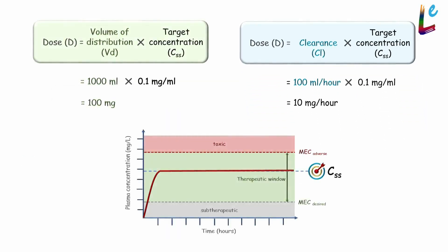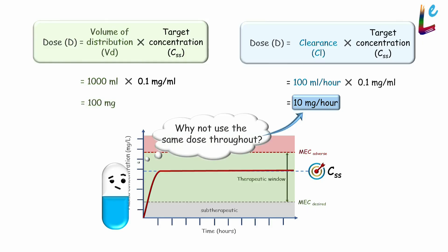Now you can see there are two doses. The initial dose we administered is 100mg, but the maintenance dose we administered is just 10mg per hour. But then why not start and maintain with the same dose of 10mg per hour? Let's see.